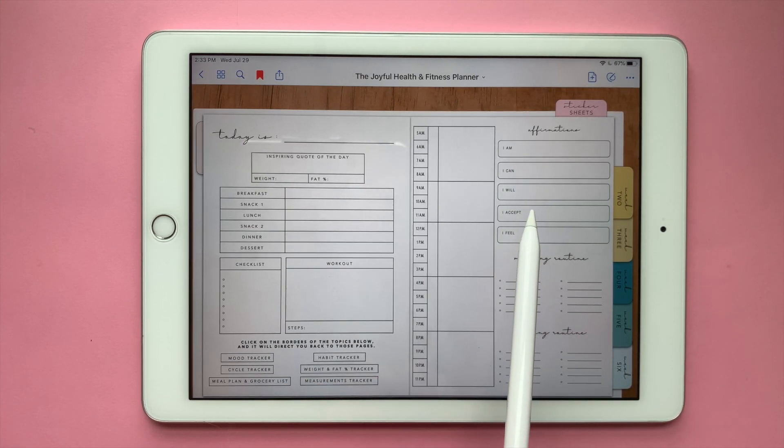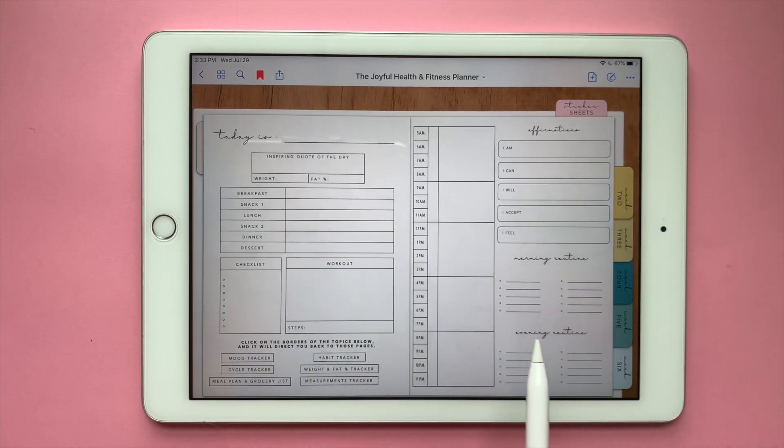I am, I can, I will, I accept, and I feel. So you can fill it out daily and go back to it or copy paste it throughout your days. Here you have a space for your morning routine and your evening routine.